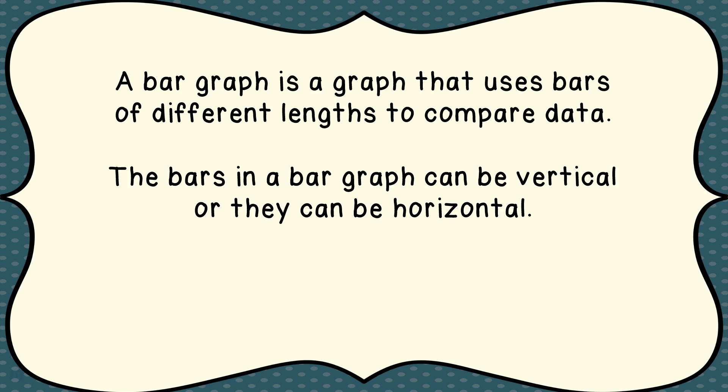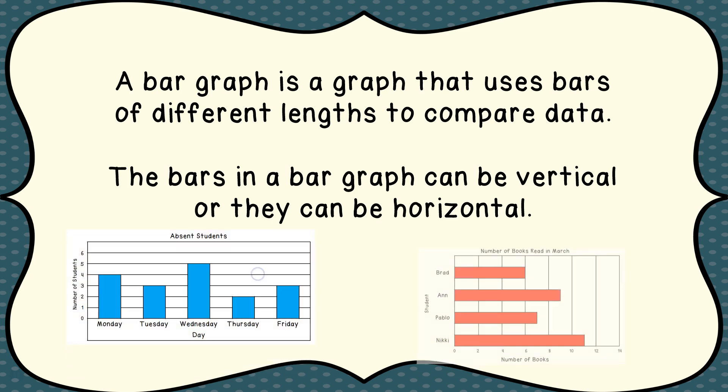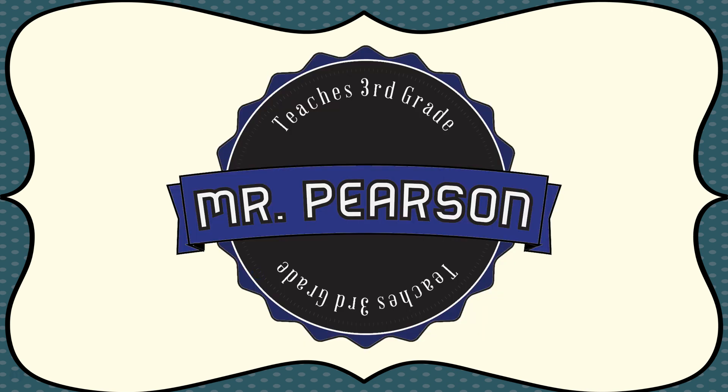Again, remember: a bar graph is a graph that uses bars of different lengths to compare data. The bars in a bar graph can be vertical — going up and down — or they can be horizontal. My name is Mr. Pearson. I hope you enjoyed learning about bar graphs with me. Go out there and show everyone what you learned. We'll see you next time.